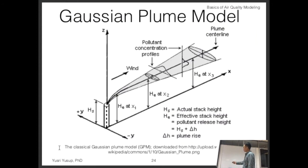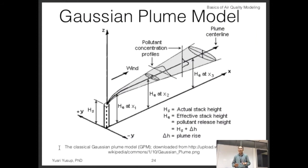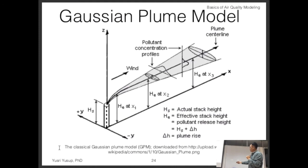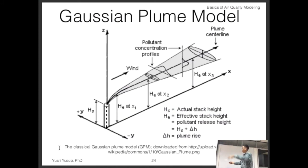Hs is the actual stack height — the physical height of the stack. He is the effective stack height, which is the stack height plus additional height gained because when gas is released from the stack it has a certain velocity, carrying the plume slightly above the stack top. So the effective stack height equals the actual stack height plus delta-H, which represents how much the plume rises before it travels downwind. This delta-H is called the plume rise.